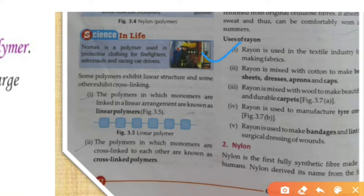When rayon is mixed with wool we can make durable carpets, and even tires. It is also used as a surgical bandage. Rayon is prepared from cellulose, which is a natural fiber, but it needs extensive chemical treatment to form rayon. Rayon absorbs well and is comfortable to wear.